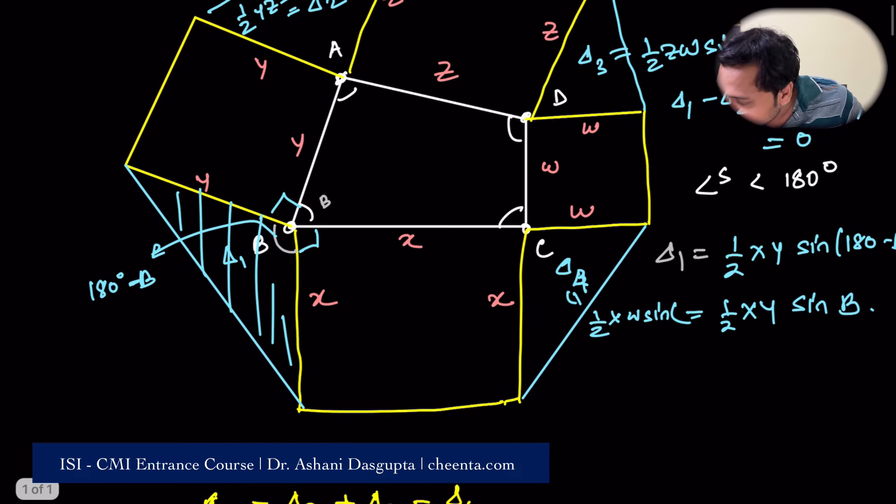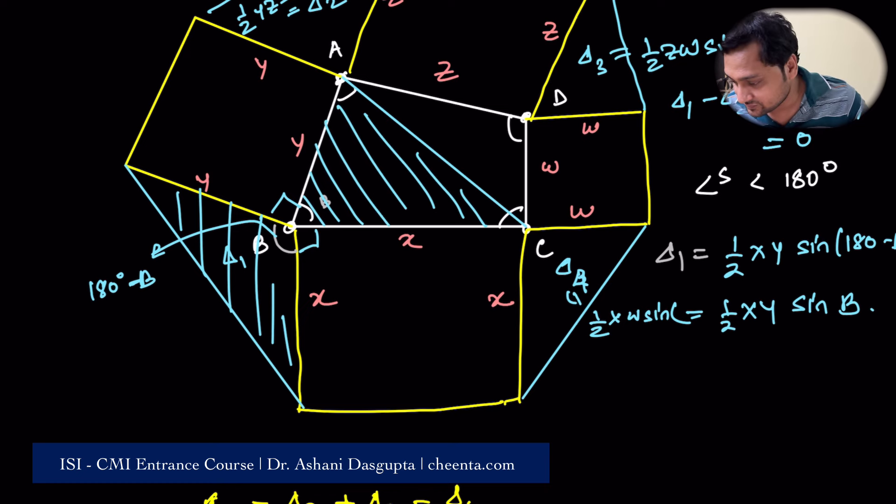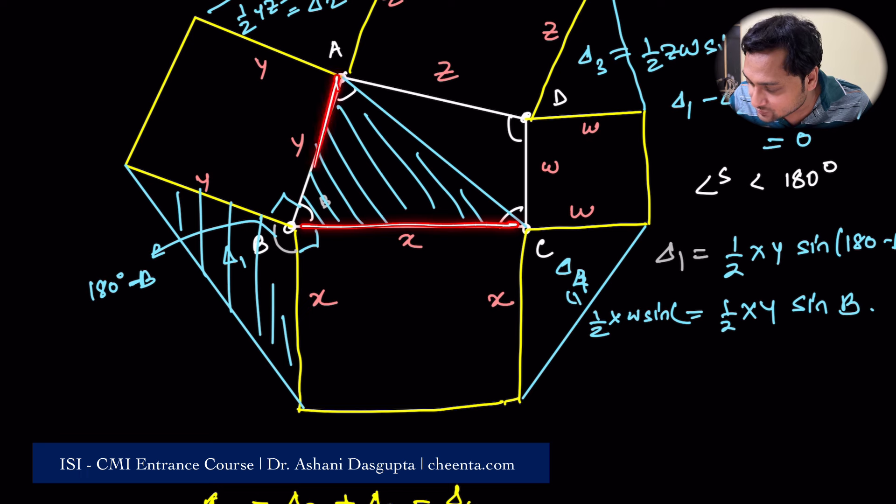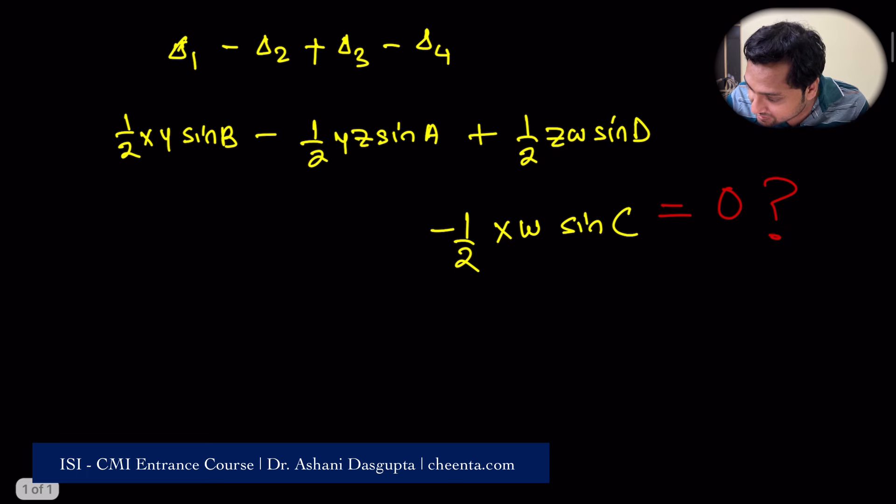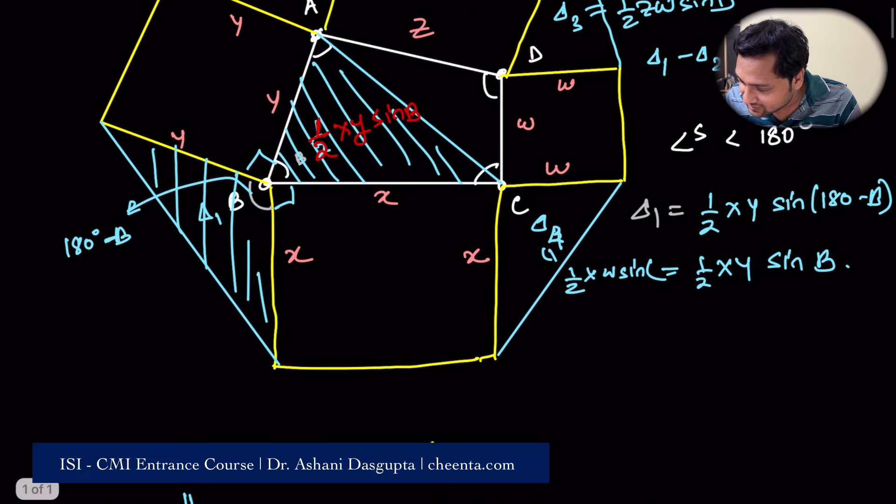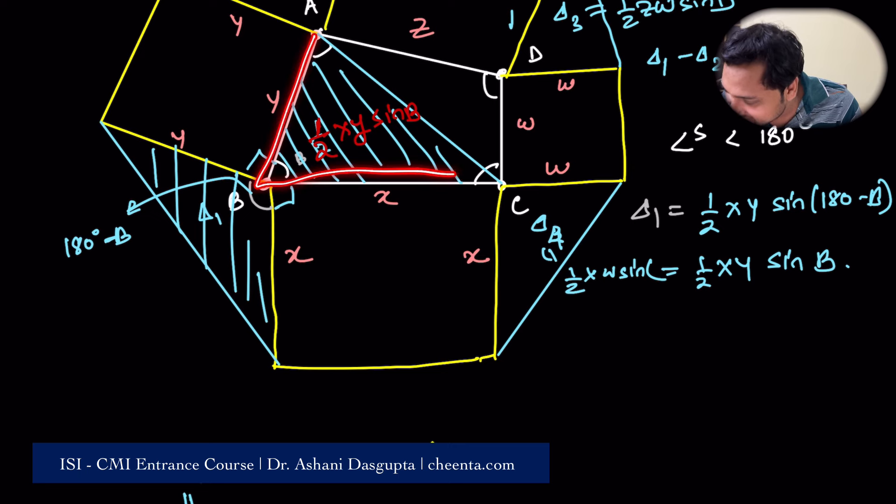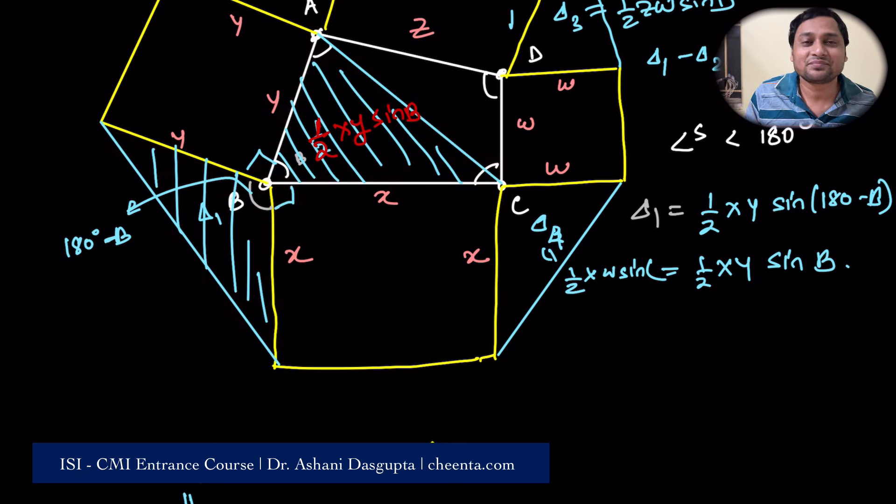This is actually very easy when I tell you, but you have to observe it. So let me just join the diagonal AC. Then what is the area of this triangle ABC? Notice that this side is x, this side is y, this side is angle b. So the area of triangle ABC is half, maybe I can write with red, half xy sin b. This is the exact angle that we have here. So this is also, this was delta 1, but this is also area of triangle ABC. Isn't that awesome? This triangle's area is equal to this triangle's area. Right?